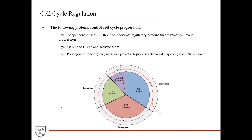The following two types of proteins are highly involved in cell cycle regulation. You have cyclin-dependent kinases, or CDKs—as the name implies, they're dependent on activation from cyclin binding. They're kinases, so they phosphorylate regulatory proteins and are involved in regulating progression of the cell cycle, particularly at the G1, G2, and M checkpoints.